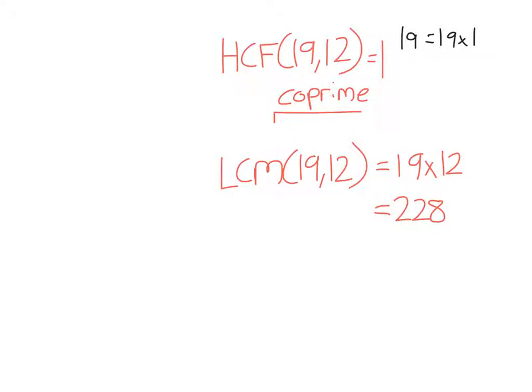There are other ways to find highest common factor and lowest common multiple. Later in this part of the course, we're going to look at using prime factorization trees to do this — but we need to learn a bit more before we get there. For now, the strategy for highest common factor is: find the factors of each number, then find the highest number that appears in both lists. To find the lowest common multiple, you can either write out the multiples of each number and find the lowest in both lists, or use the formula — multiply the two numbers together and divide by the highest common factor.